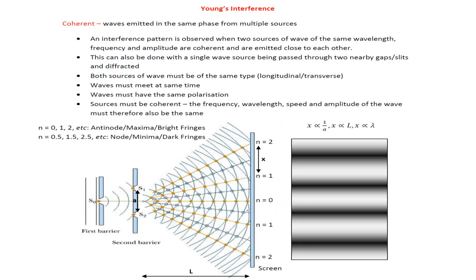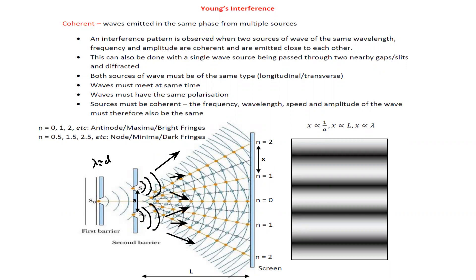According to Young's double slit experiment, if we have a single source and pass it through a barrier or a gap, the wave is diffracted. Diffraction is more significant because the wavelength is approximately equal to the gap size. When it passes through double slits — two openings — the wave is further diffracted, and as the two diffracted waves travel, they interfere at certain points.